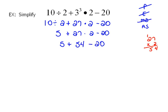Now all we have left is addition and subtraction. Doing those from left to right. So 5 plus 54 would be 59, minus 20 which would be 39.